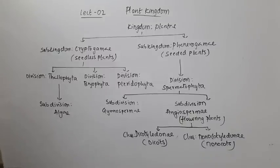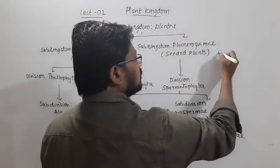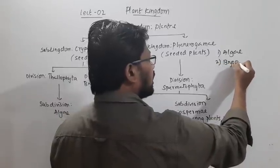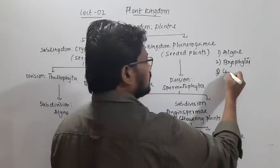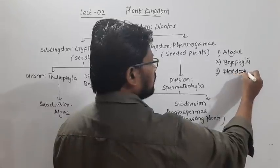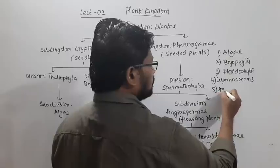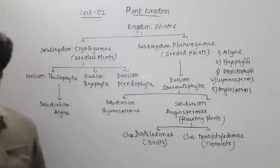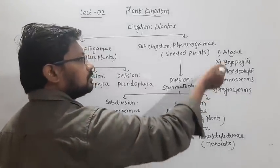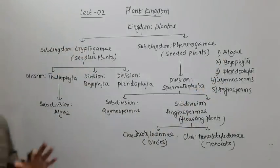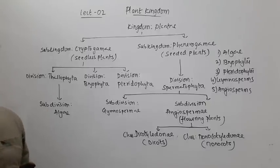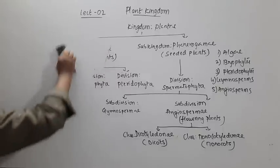So this is the overall classification of kingdom Plantae. I'm going to discuss the groups Algae, Bryophytes, Pteridophytes, Gymnosperms, and Angiosperms — these five groups of plants. I will discuss in detail about Algae first, then Bryophytes, and we will go up to Angiosperms.